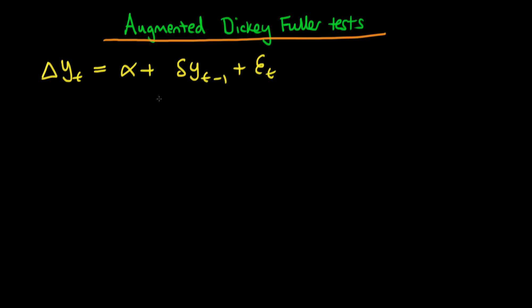Under the null hypothesis that we have a unit root, delta equals 0, against the alternative where delta is less than 0. That was the case for an AR1 process, which we went through in detail, but how do we actually test for a unit root in the presence of higher order processes?